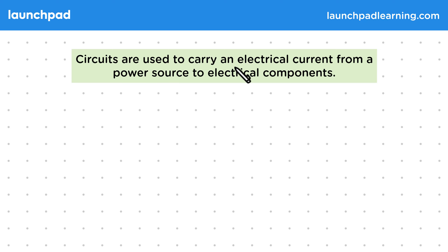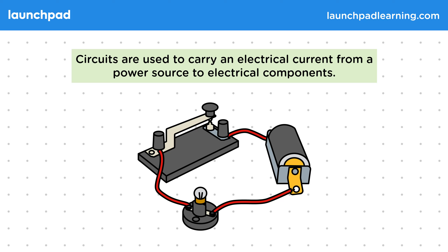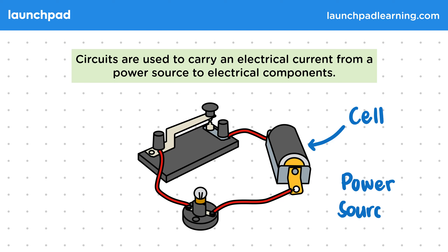Circuits are used to carry an electrical current from a power source to electrical components, where the current can then supply energy to these. Here's an example of a circuit with multiple components. First we have a cell, which is a type of power source that will power the circuit.